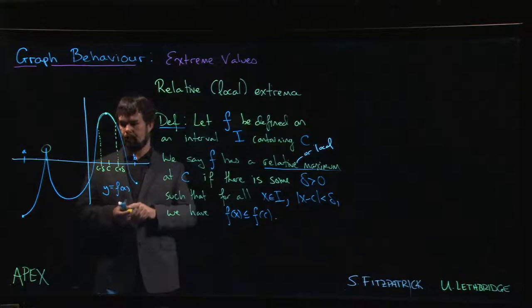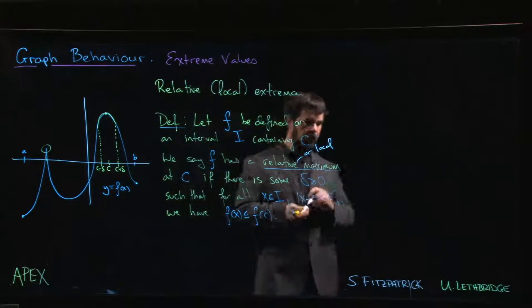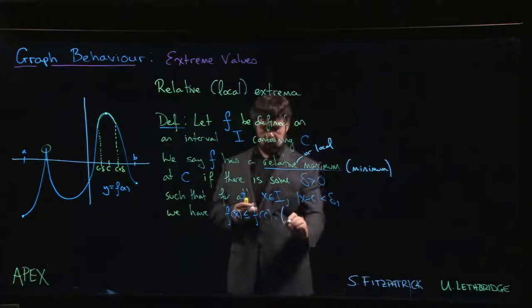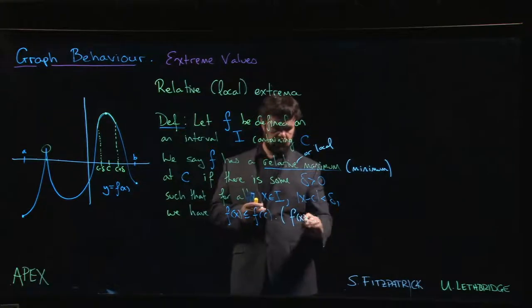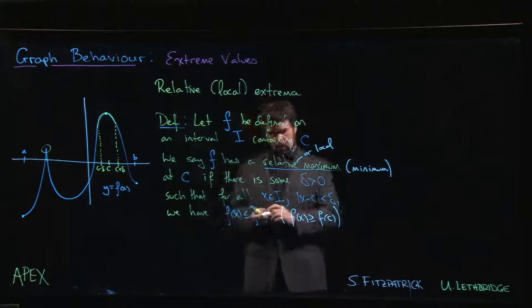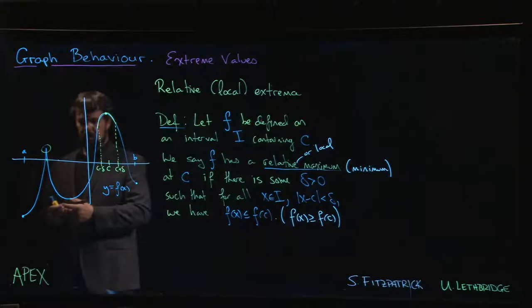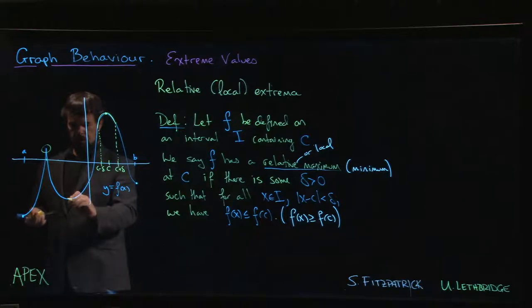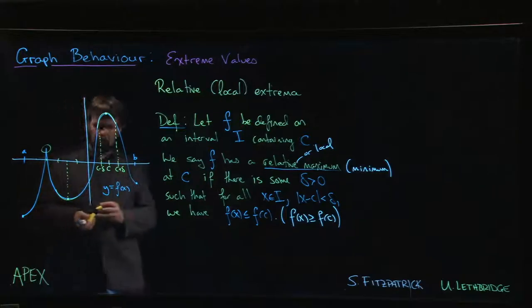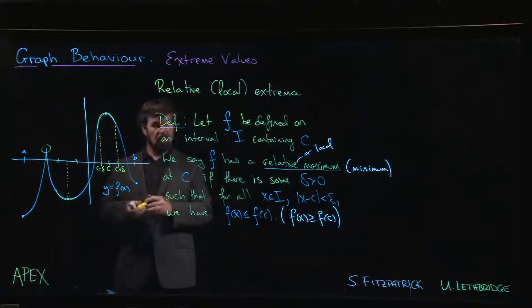And of course you can similarly define a relative minimum to be one where the inequality goes the other way, like so. And so then we certainly see a relative minimum here. At this point on the graph, if I move a little bit either side of that point, I'm dealing with this portion of the graph and it's the smallest y value that I see over that portion of the graph.